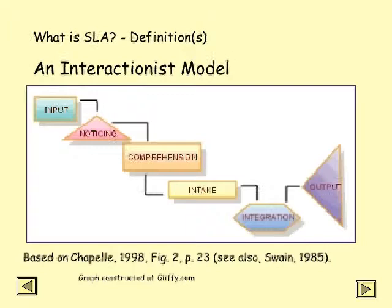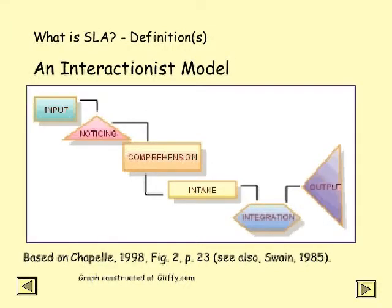By the 90s, largely due to people like Swain, we have a much greater realization of the importance of interaction and output. The interactionist model, here demonstrated by Chappelle, includes the input, but also noticing, awareness, apperception. The learner has to notice something before they can learn it, before it can become comprehensible. Comprehension leads to intake, or uptake as some researchers call it, and the learner can then integrate what is noticed into the system — the linguistic model the learner is building internally — and this will then result in output. So this is a far more complicated model than Krashen.